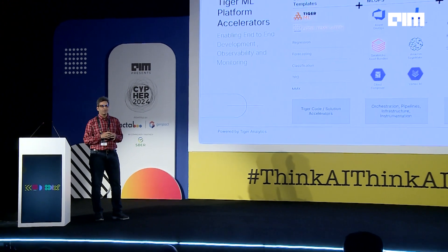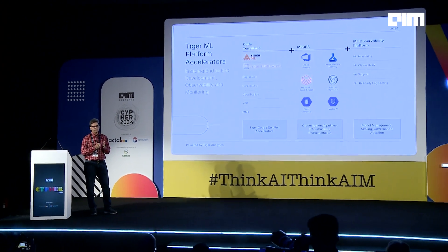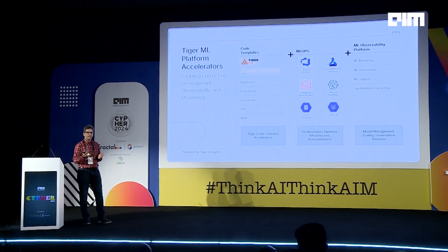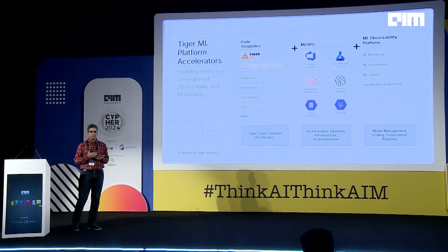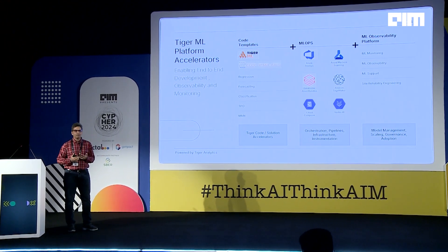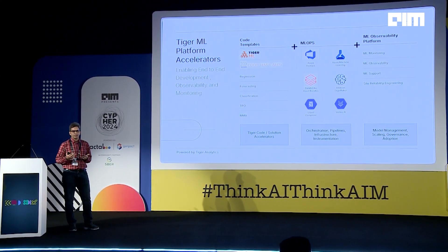What I'm talking about is a platform that Tiger has — the Tiger ML core platform. This platform enables end-to-end development, automation, and observability. The platform is an enterprise solution, which I can break down as code templates for the development part, MLOps for the automation part, and the observability layer for observability and monitoring.